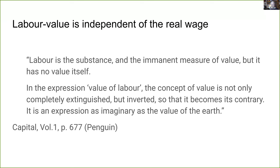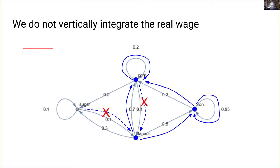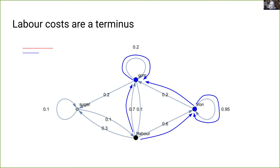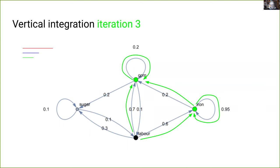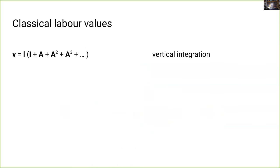One hour of labor under these assumptions is one hour, regardless of what workers consume. We could ask a different question — what is the value of labor power, equivalently what is the value of the real wage — but that's not what we're doing here. So we must not vertically integrate through the real wage. That's why we have the X's on those real wage flow lines. We treat labor inputs as a terminal point in vertical integration, and as we keep iterating, our running total converges to a finite value in the infinite limit.